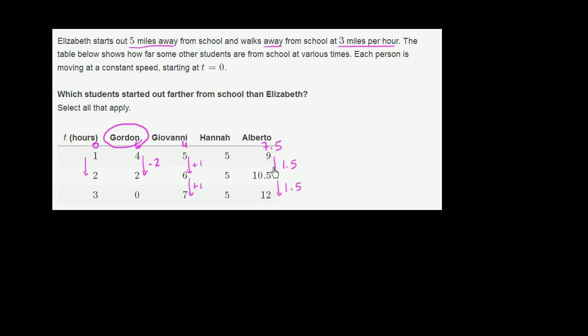So even though he's going away from school, he definitely started further from school than Elizabeth. Elizabeth started out 5 miles away. Alberto started off 7 and a half miles away, and he's going even further and further. So the two students that started out farther from school than Elizabeth are Gordon and Alberto.